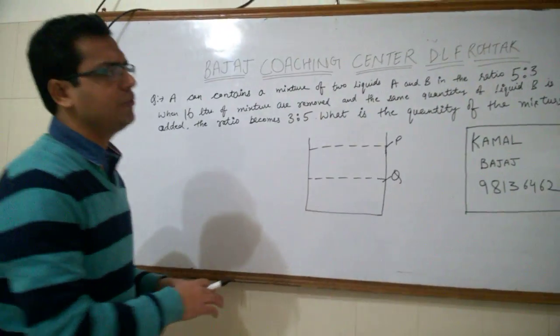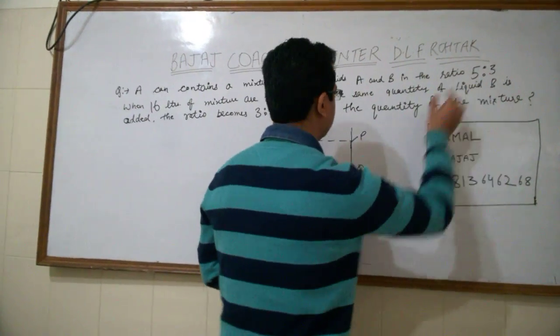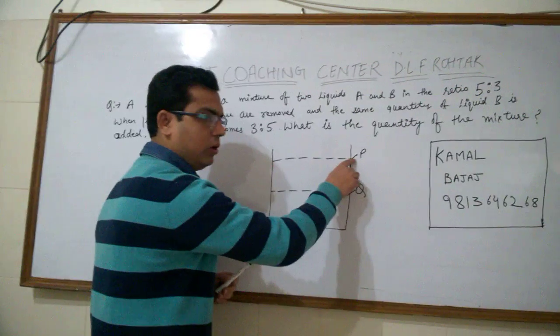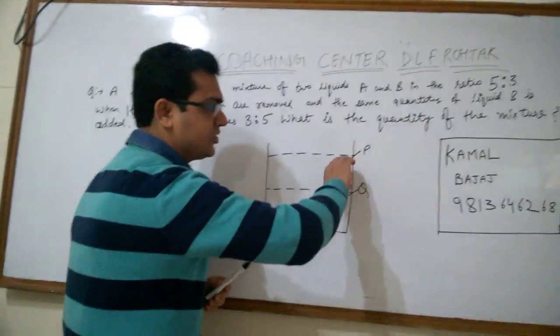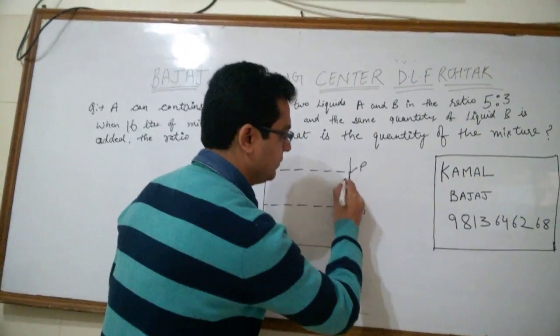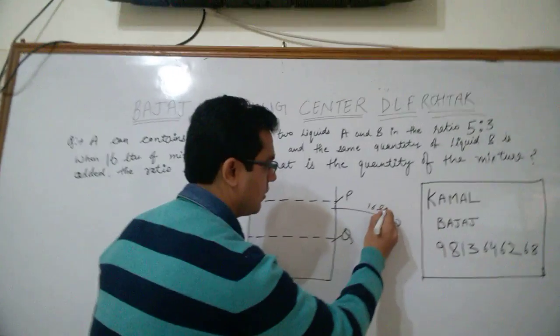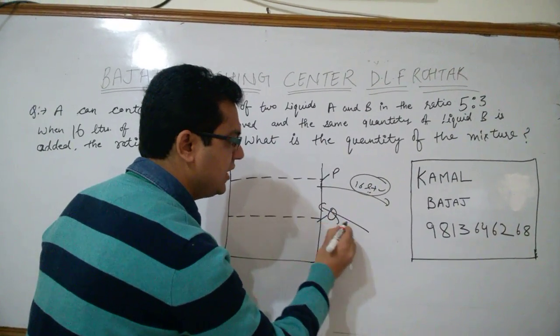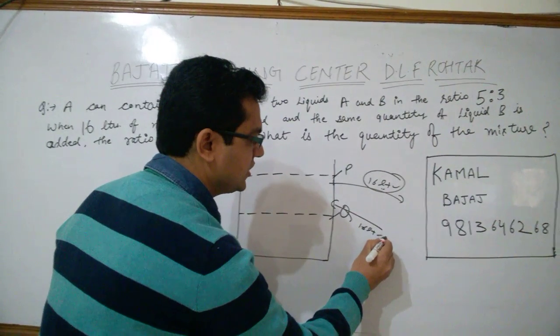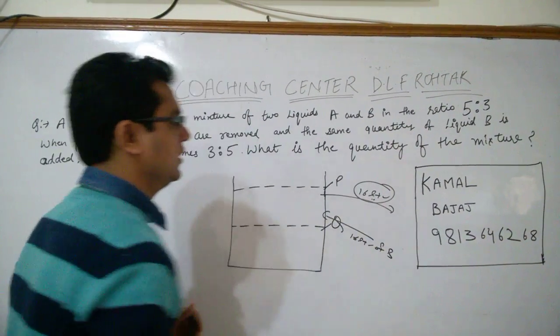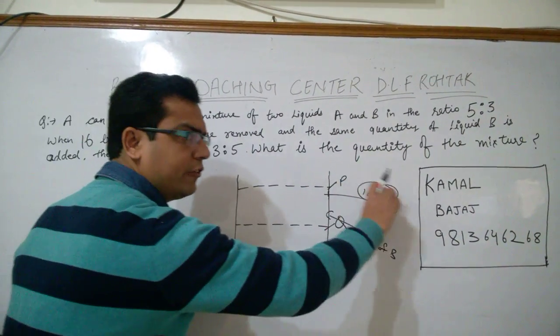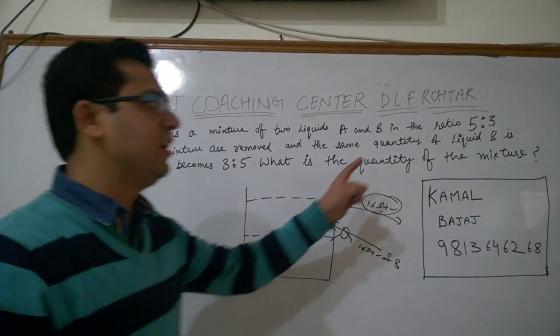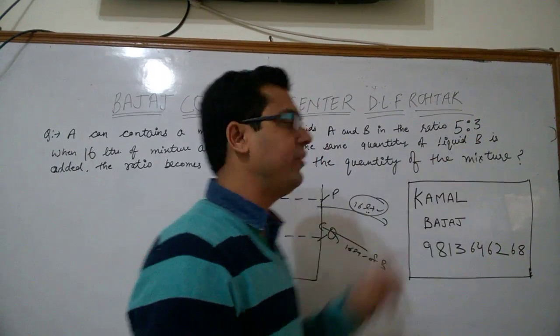Okay, the initial ratio was 5 is to 3. Suppose initially the level of the mixture was up to B. And you took 16 litres of the mixture, 16 litres of the mixture and you are adding 16 litres of B. Suppose if you took 16 litres of the mixture, the level comes down to Q, but the ratio of A and B will remain the same. It means 5 is to 3.